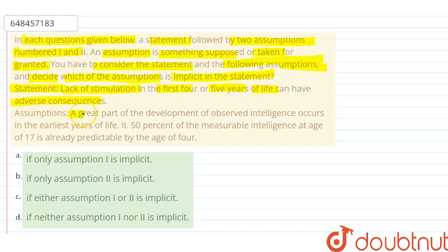Assumption 1 is: a great part of the development of observed intelligence occurs in the earliest years of life. And assumption 2, which is: 50% of measurable intelligence at the age of 17 is already predictable by the age of 4.